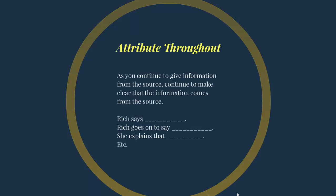An example opening for a summary would include the title of the piece, the author's name, and the purpose. For example: 'In Claiming an Education, Adrienne Rich argues that students should actively claim their educations rather than merely receiving them.' Here, Claiming an Education is the title, Adrienne Rich is the author's name, and what follows is the main purpose or point of the piece.